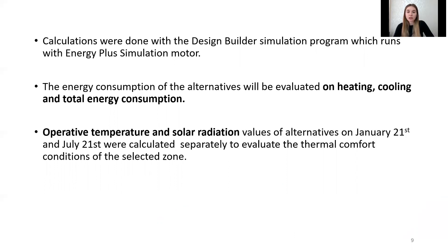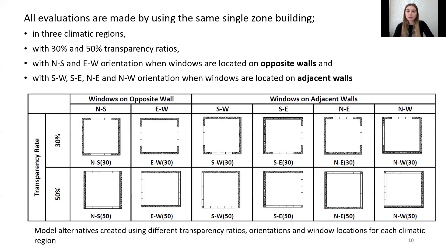The energy consumption of the alternatives was evaluated on heating, cooling, and total energy consumption. Operative temperature and solar gains were calculated for January 21st, representing the coldest day, and July 21st, representing the hottest day of the year. All evaluations are made using the same single zone building in three climatic regions — Istanbul, Diyarbakır, and Erzurum — with 30% and 50% transparency ratios and different window locations: windows located on opposite walls and windows located on adjacent walls.